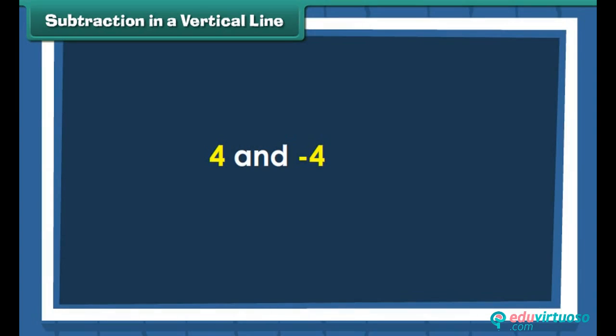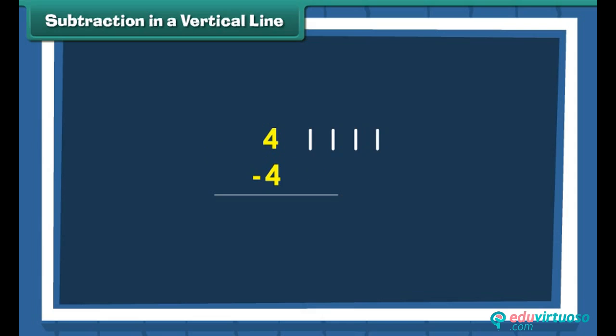Let us find four minus four. Draw four vertical lines next to four. Cross out all four vertical lines to subtract four. There are no vertical lines left. Therefore, four minus four is zero.